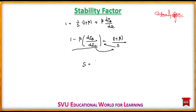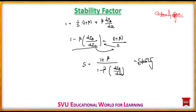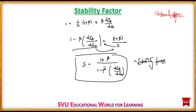The stability factor S is equal to (1 + beta) divided by (1 minus beta × dIb/dIc). This formula applies to any biasing circuit. S = (1 + beta) / (1 − beta × dIb/dIc).